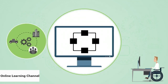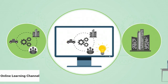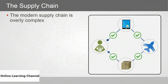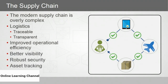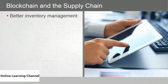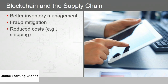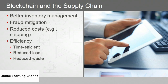Companies are interested in blockchain for supply chain solutions because the modern supply chain is complex, and companies constantly seek better ways to move parts and products from suppliers to warehouses to the plant floor to shipping to the end user. Blockchain can improve logistics by making items traceable and transparent throughout the entire process — improved operational efficiency, better visibility, more robust security, asset tracking, real-time validation, better inventory management, fraud mitigation, reduced costs, greater efficiency, less waste, faster issue resolution, and elevated trust with external suppliers.